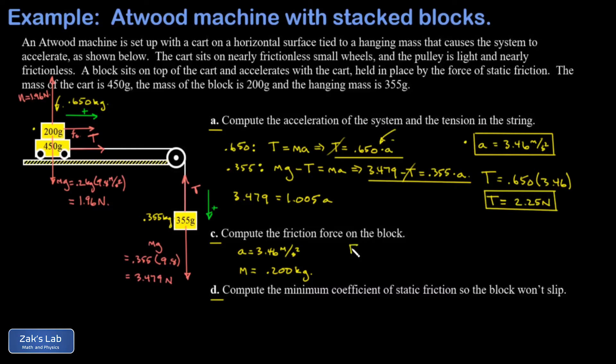And the only force acting horizontally on that block is the static friction force. So I can write down Newton's second law, F net equals MA. If you like, you could specify we're talking about the x-direction net force here. And there's only one force,